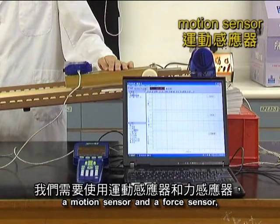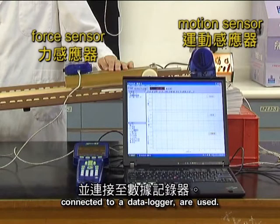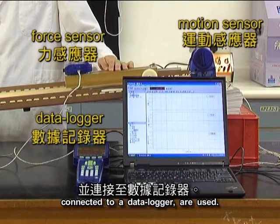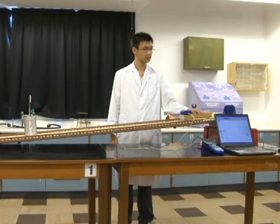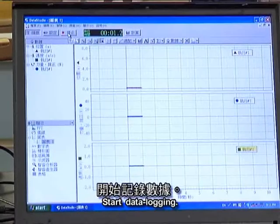a motion sensor and a force sensor connected to a data logger are used. The track is tuned at an angle to the horizontal. Start data logging.